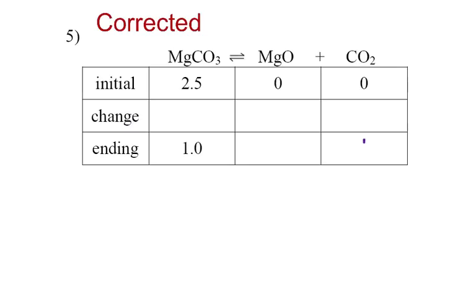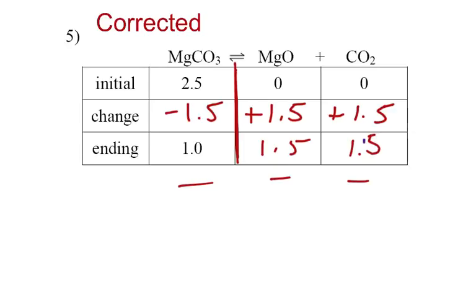The last problem. This one on my paper is wrong, so I had to fix it. Same idea though. If I started with 2.5 and end up with 1.0, then I must have used up 1.5. This is a 1 to 1 to 1 ratio this time with MgCO3. If I used up 1.5 of MgCO3, I must make 1.5 of magnesium oxide and 1.5 of CO2. Since I started with 0 in both cases, I end up with 1.5. That's how you do this kind of stuff called the ICE Box.